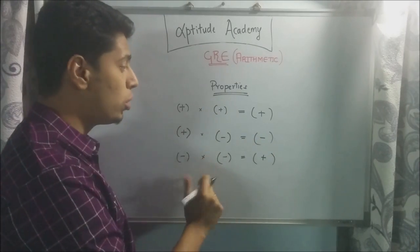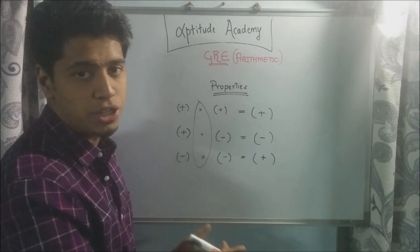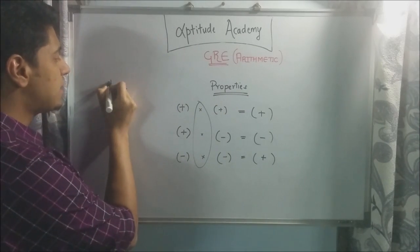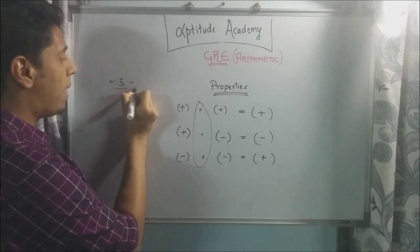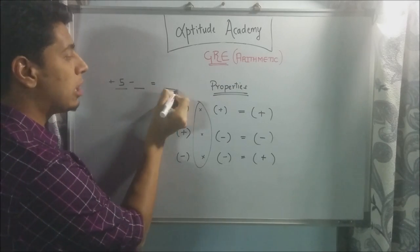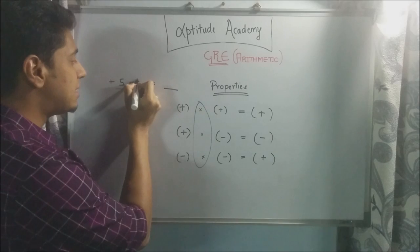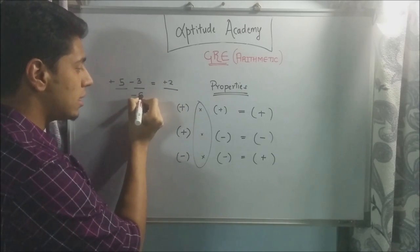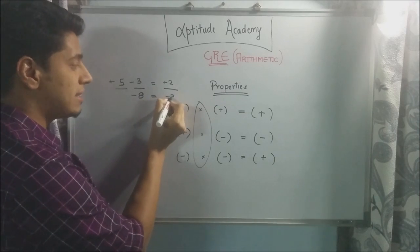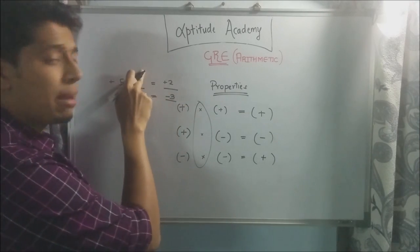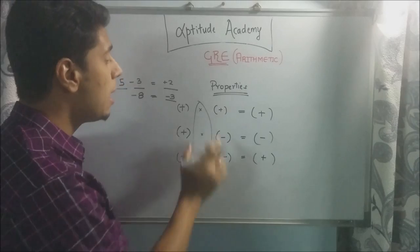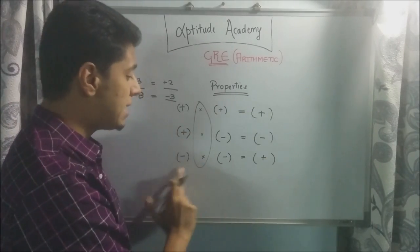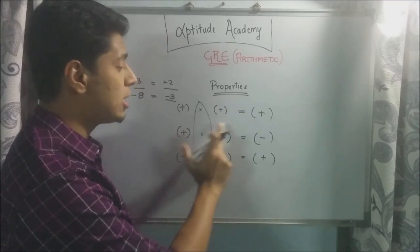Now these properties hold good only for multiplication and division, not for addition and subtraction. Because if you have plus five and minus something, you cannot tell what will be the sign of the answer. Suppose it is three, you will get plus two. Suppose it was minus eight, you get minus three. So here the sign depends upon the value of the numbers. But for multiplication, it's always constant. Plus into plus is plus, minus into minus is plus, and plus into minus is minus.